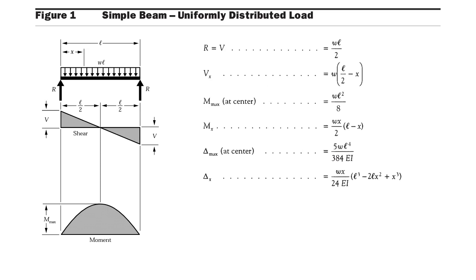The maximum deflection of a simply supported beam carrying a UDL throughout its length is 5wl⁴ divided by 384EI. Please remember this value — do not confuse it with other deflection values. It also occurs at the center. The reactions at both ends are R = wl/2.